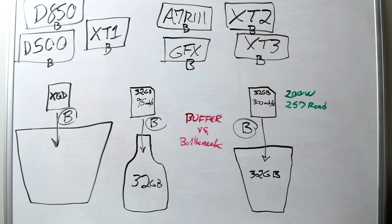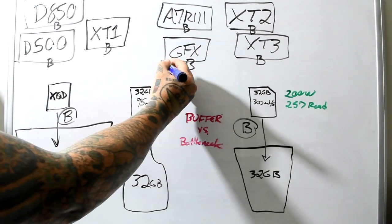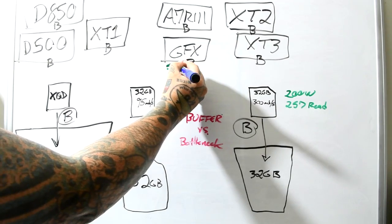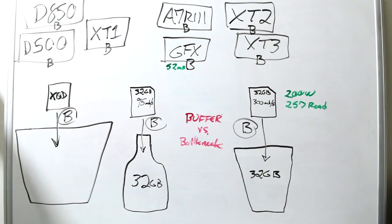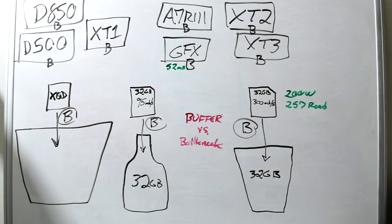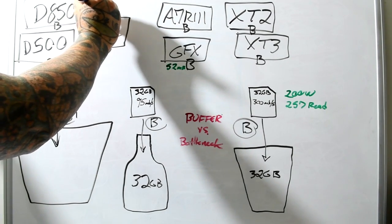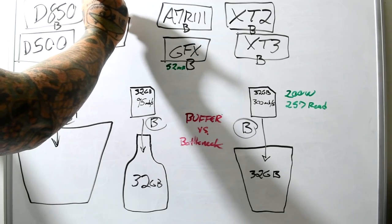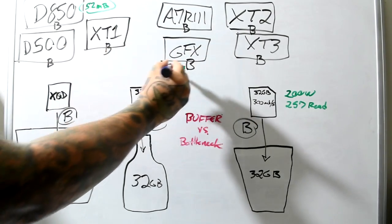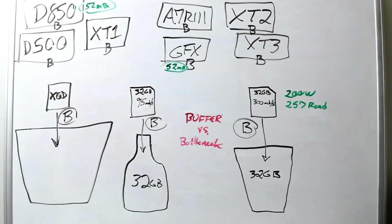I don't know what you know about a lossless compressed raw file, like from a GFX, for example. It averages about 52 megabytes, lossless compressed 14-bit raw files. Same thing, actually, oddly enough, from the 45 megapixel Nikon D850. They're huge raw files.